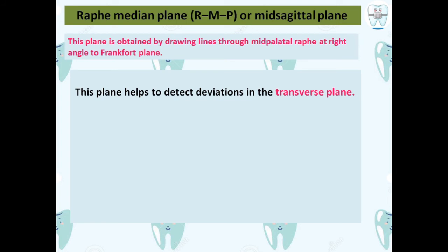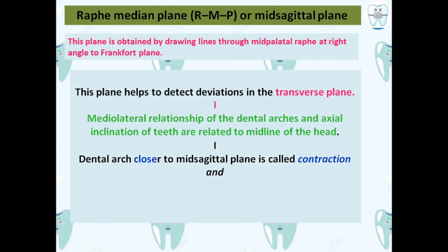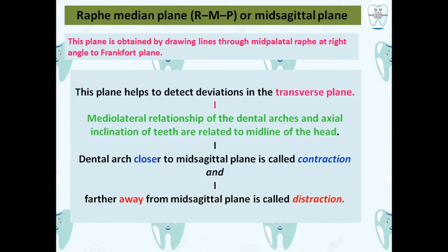The mid-sagittal plane relates the medial-lateral relationship of dental arches and the axial inclination of the teeth to the midline of the head. If the dental arch is closer to the mid-sagittal plane, it is contraction; if it is away from the plane, it is distraction. So to summarize: mid-sagittal plane gives contraction or distraction; orbital plane gives protraction or retraction.